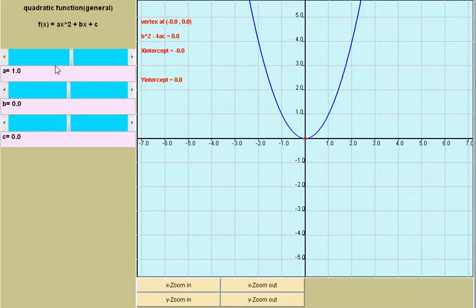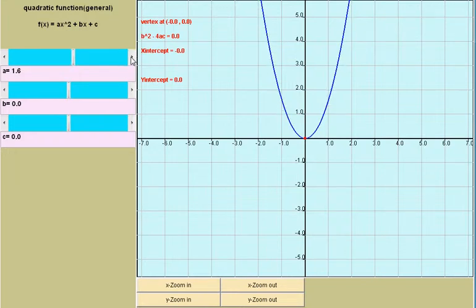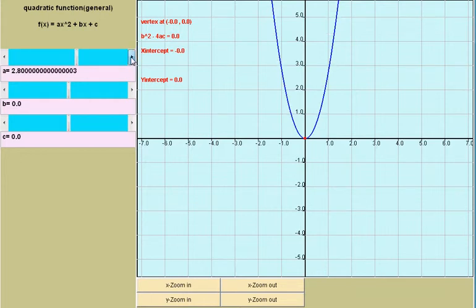For example, starting from a equal to 1 and increasing the value of a shows that the graph stretches vertically and also for a positive the graph opens upwards.